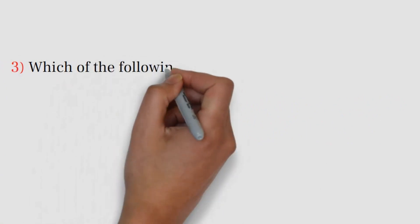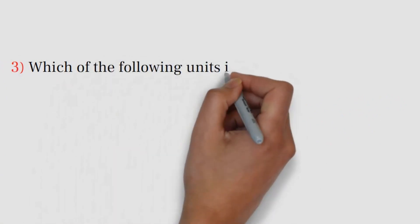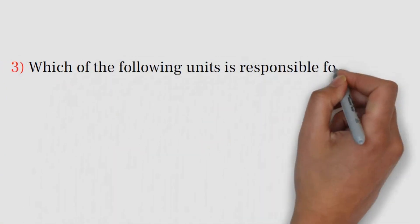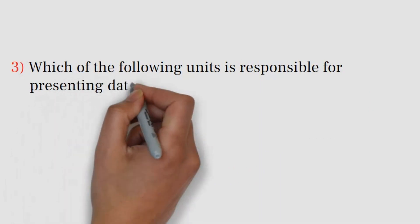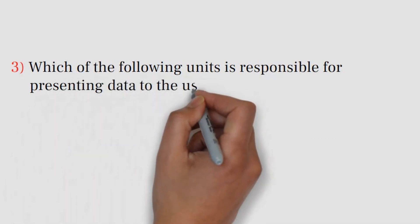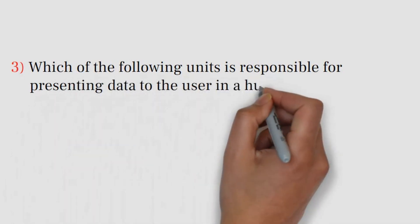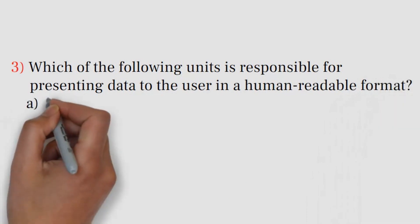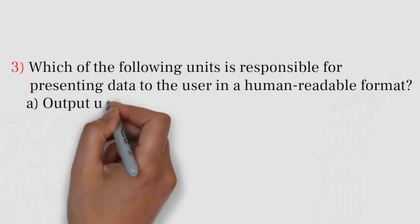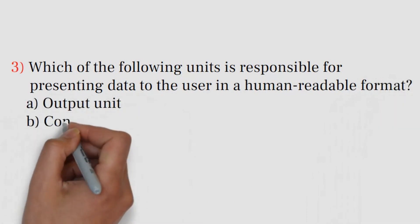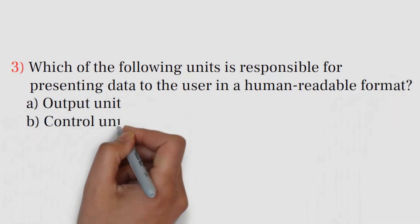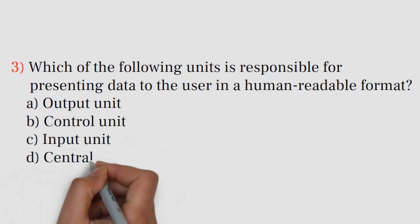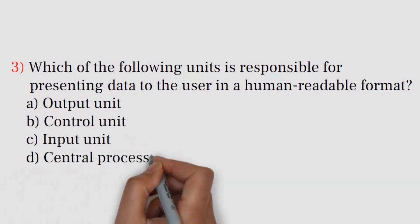Question number 3. Which of the following units is responsible for presenting data to the user in a human-readable format? A. Output unit. B. Control unit. C. Input unit. D. Central processing unit.